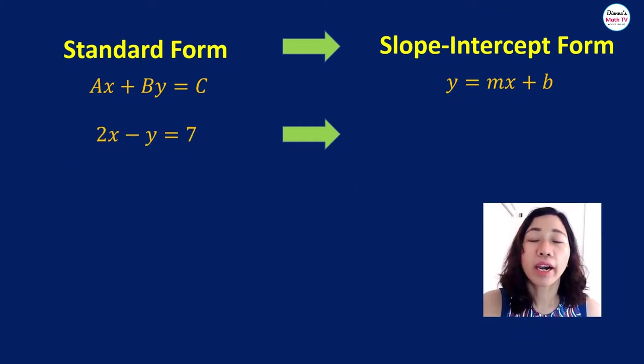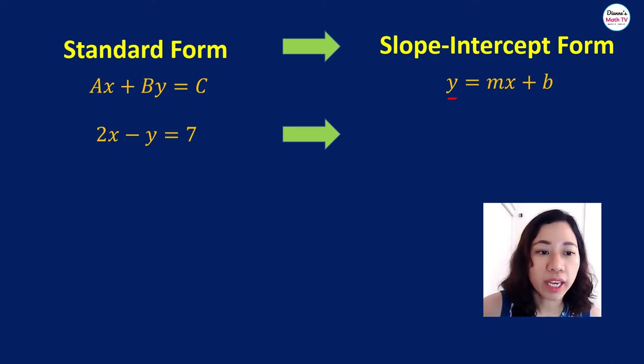Let's look at our next example. We have 2x minus y equals 7. So remember that we want to isolate our y. Here, I want to remove the 2x. Just like in our previous example, you subtract 2x on both sides. This cancels out. 2x minus 2x is 0. So we have negative y is equal to 7 minus 2x.